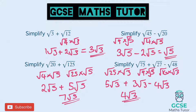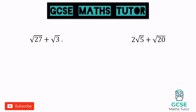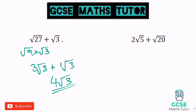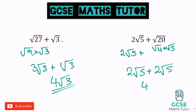Two more quick ones to finish. Root 27 plus root 3: root 27 is root 9 times root 3, which is 3 root 3, and adding 1 root 3 gives 4 root 3 as the final answer. For the next one, 2 root 5 doesn't simplify, and we're adding root 20, which is root 4 times root 5 - that's 2 root 5. So 2 root 5 add 2 root 5 gives us 4 root 5.